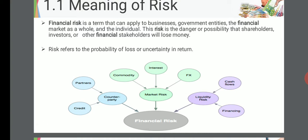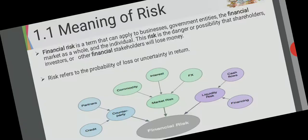Cash flow risk arises because future cash flows are always uncertain. As we know from capital budgeting, we find future cash flows and discount them to present value — but future cash flows are uncertain because it is the future and you don't know what will happen.